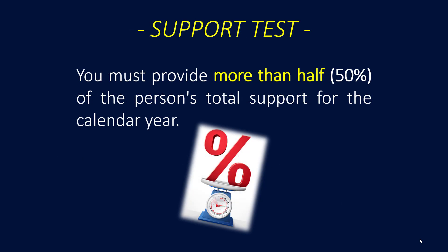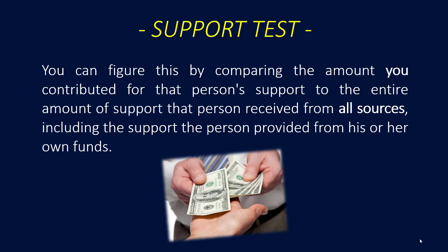The support test for a qualifying relative: you or the taxpayer must provide more than half of the person's total support for the calendar year. You calculate this by comparing the amount that you or the taxpayer contributed for that person's support to the entire amount of support that person received from all sources, including the support that the person provided from his or her own funds.